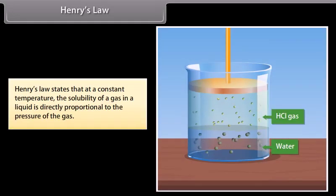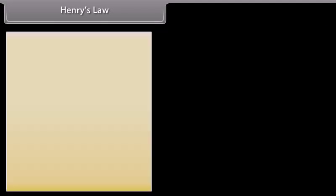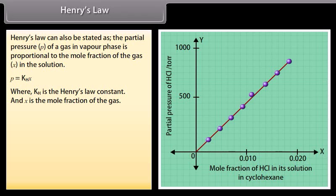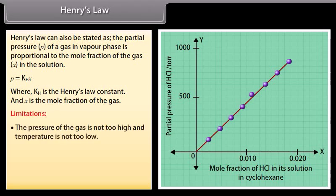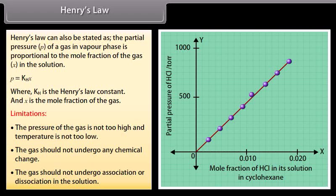Henry's law states that at a constant temperature, the solubility of a gas in a liquid is directly proportional to the pressure of the gas. It can also be stated as: the partial pressure of a gas in vapor phase is proportional to the mole fraction of the gas in the solution — P = K_H × X, where K_H is the Henry's law constant and X is the mole fraction of the gas. Limitations: the pressure of the gas should not be too high and temperature not too low; the gas should not undergo any chemical change; and the gas should not undergo association or dissociation in the solution.